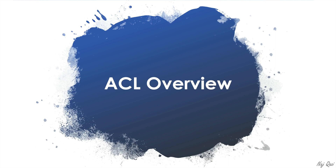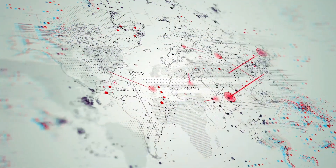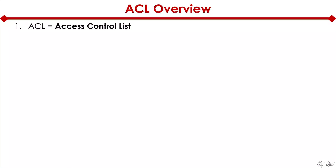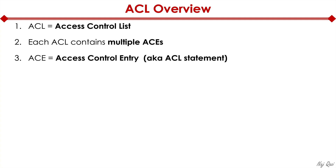Let's first cover ACL overview. ACL stands for access control list. Each ACL contains multiple ACEs, or access control entries. You can also think of an access control entry as an ACL statement. So basically, an ACL is a collection of statements or ACEs.